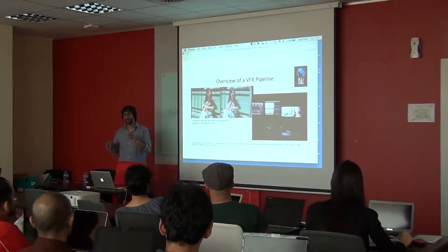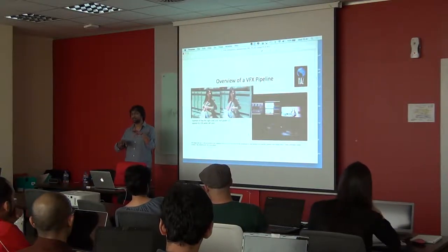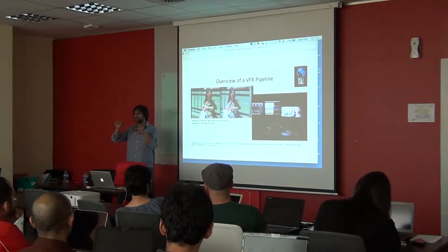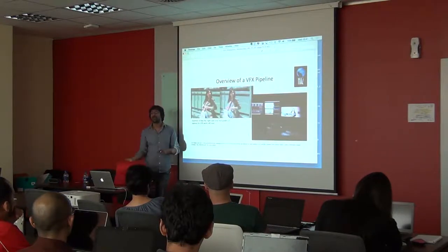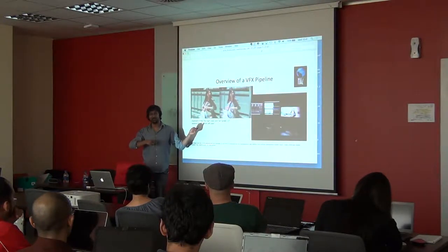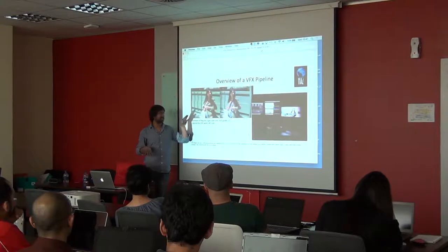Your artist is doing your composite, puts the LUT in there, makes sure it looks good, so that everyone can sign off for the shot. But when you render it and give it back to the editors or back to the colorists, don't give it with the LUT — give it without the LUT so that the colorists can work on it.